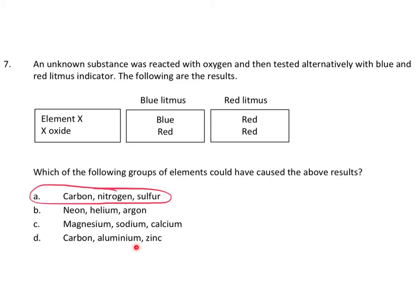Carbon could work, but aluminium and zinc are metals — metal oxides are basic or amphoteric as you get towards the in-between zone of acidic and basic oxides, so that can't be it. The answer has to be A, because carbon dioxide is acidic, nitrogen dioxide is acidic, and sulfur dioxide is acidic. These are acidic oxides and have turned the blue litmus paper red.